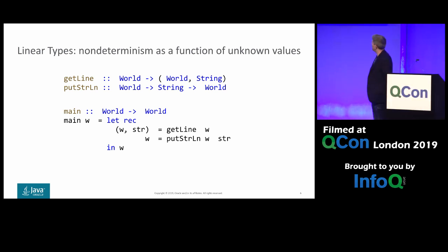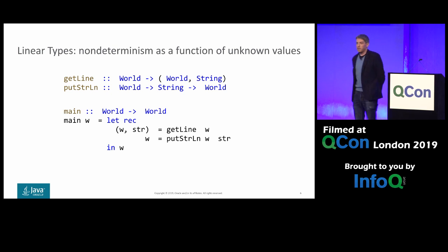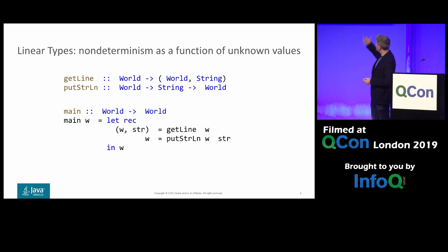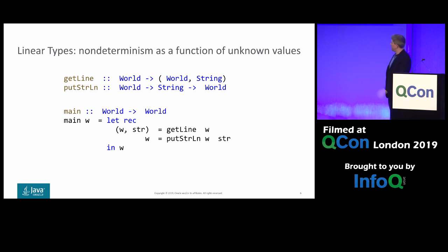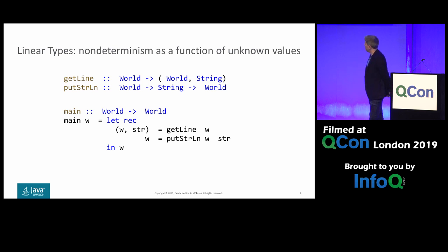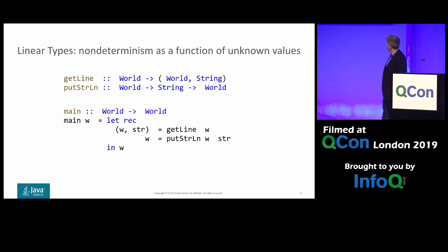We have IO subroutines — get_line and put_string_line — that take a hidden mysterious parameter called 'world' representing the state of the universe. These subroutines consume it and return a new value of world plus possibly something else: get_line also returns a string read from the console, while put_string_line outputs that string. The main program takes the state of the world and returns a new state: pass world to get_line, get back a new world and a result string, pass that world to put_string_line, and we're done.